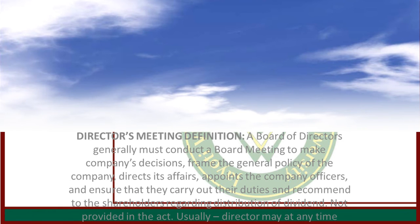Director Meetings: A board of directors generally must conduct a board meeting to make company decisions, frame the general policy of the company, direct the affairs, appoint public officers, ensure that they carry out their duties, and report to the shareholders regarding distribution of dividend as provided in the act.